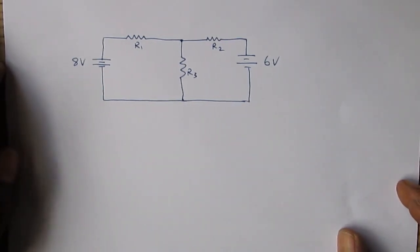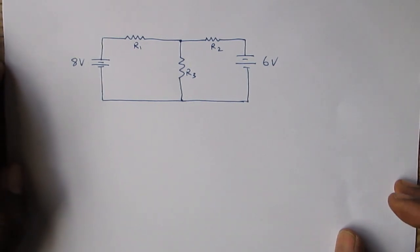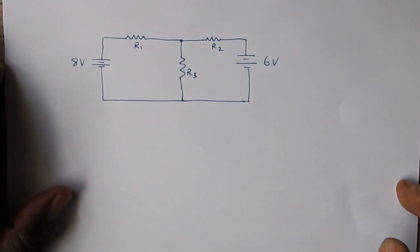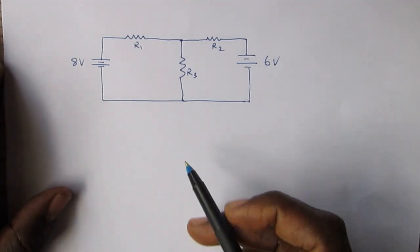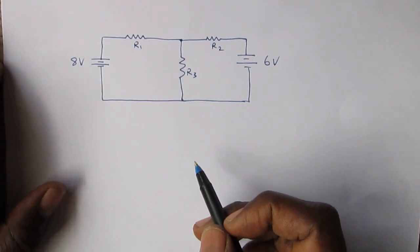In this video I will demonstrate how to produce two simultaneous equations to solve for the three unknown currents in the circuit: the current through R1, R2, and R3.